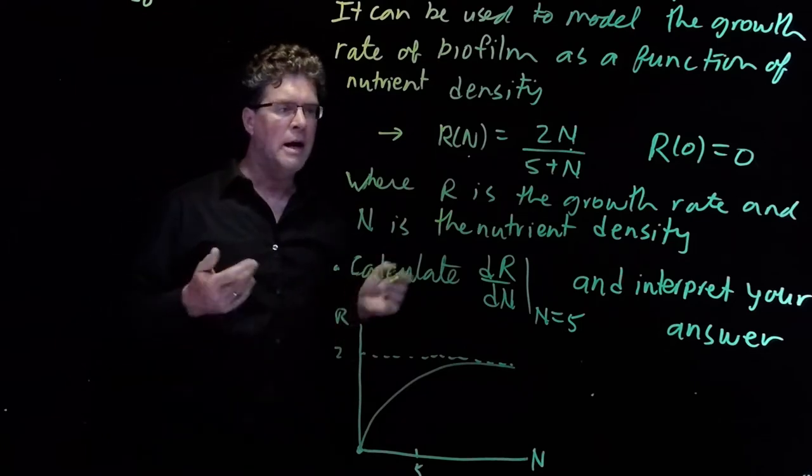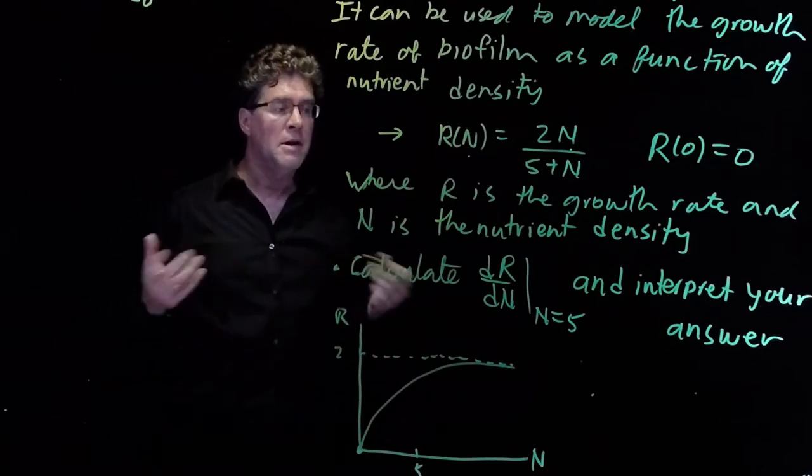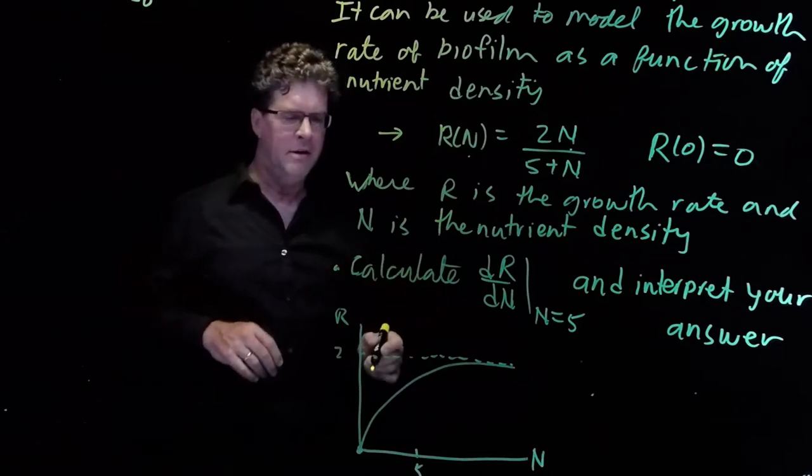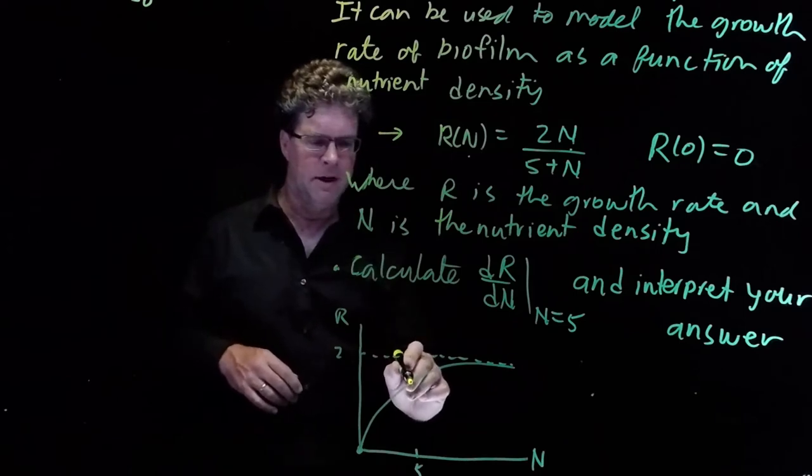And we're asked to evaluate dr/dn, the derivative of r with respect to n, at n equals 5. So let's find out what point we're going to be evaluating that at.